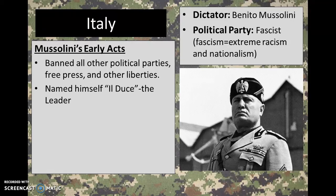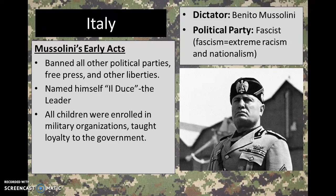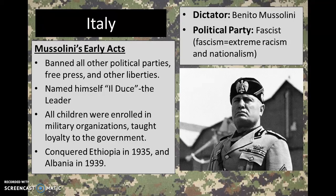Mussolini actually named himself Il Duce, which is Italian for 'the leader.' Under Mussolini, every child in Italy was enrolled in a military organization and taught loyalty to the government — he was looking to younger Italians and trying to breed them into following him and the fascist party. After coming to power, he conquered Ethiopia in 1935 and then Albania in 1939, using Italy's military force to conquer new lands and gain as much power as possible.